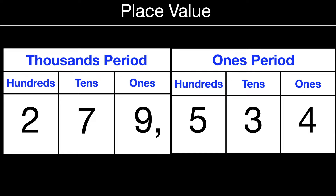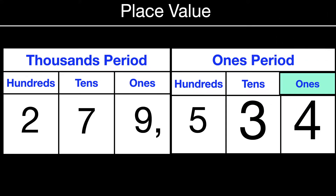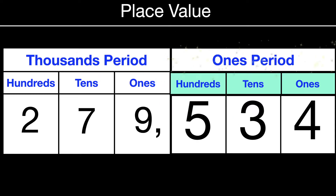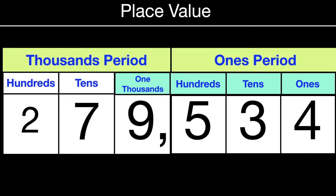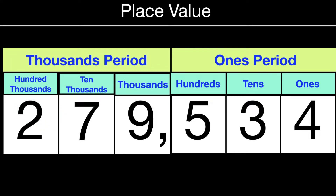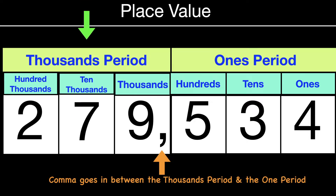On a place value chart, our number looks like this. On the right, the four is in the ones place value, the three is in the tens place value, five is in the hundreds place value — those three make something called the ones period. Then moving over, we have the thousands period, which also has ones, tens, and hundreds: the nine is in the one thousands, the seven is in the ten thousands, and the two is in the hundred thousands. The comma goes in between the thousands period and the ones period, so make sure you're putting that in your answers today.